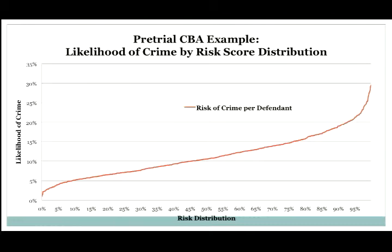As I close, I wanted to give you an example. This is an example — we haven't been able to do this yet in a jurisdiction; we're working towards gathering the data. A growing number of jurisdictions now have risk tools to look at the risk of an individual committing crimes while out pretrial. What we have here is a graph showing the risk distribution — think of this as 100 individuals lined up, the least risky down at 0%, the most risky towards 95%. The lowest-risk individuals may have a 1–2% likelihood of committing crime while out pretrial; moving to the highest-risk individuals, almost up to a 30% chance.